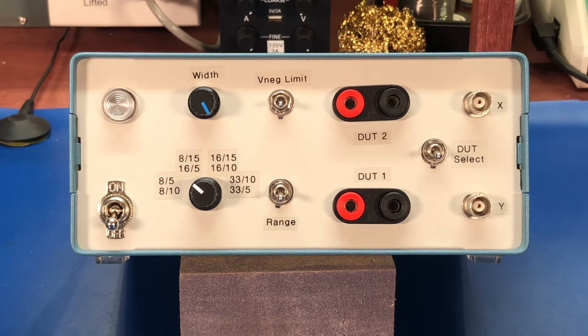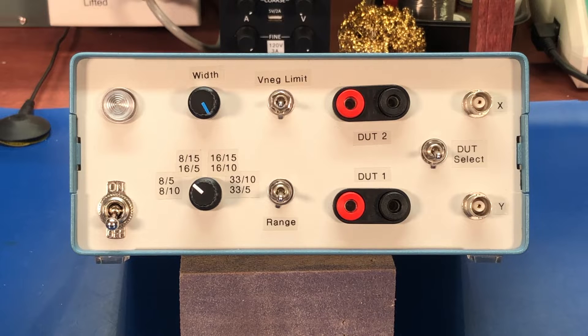This curve tracer will support eight different settings as opposed to the four that I had before. It also supports limiting the negative voltage swing. There's a diode across the device under test outputs.